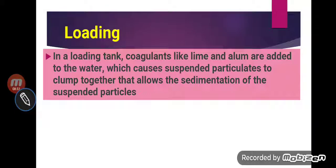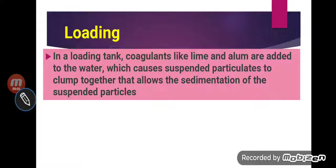To increase the rate of sedimentation, we use a process called loading. In a loading tank, coagulants like lime and alum are added to the water. Lime and alum make the dirt particles heavier, which helps them to settle down at the bottom. They cause suspended particles to clump together — small particles combine with each other to make heavier particles, allowing sedimentation of the suspended particles. Loading means the clumping and coagulation of minute particles together so they settle at the bottom.